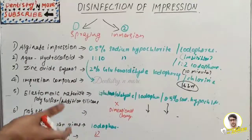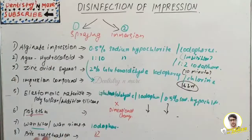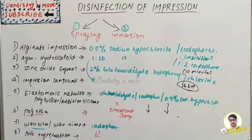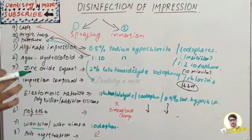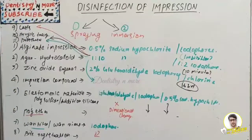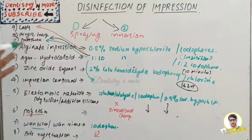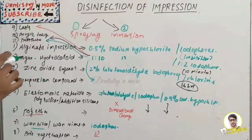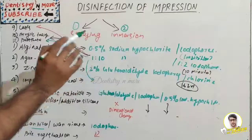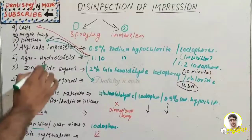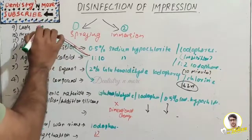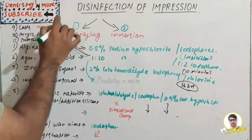After disinfection, the registration should be rinsed again to remove any residual disinfectant. For disinfection of casts, the ADA recommends that stone casts be disinfected by the spraying method until wet, or by immersion in 1:10 sodium hypochlorite or iodophore. Casts to be disinfected should be fully set, stored for at least 24 hours. Microwave irradiation can also be used — five minutes at 900 watts.